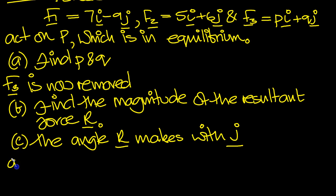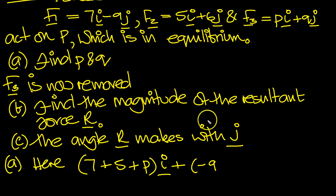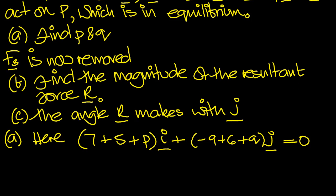So let's have a go at that then. So here, let's add up the i components, 7 plus 5 plus p, in the i direction is the resultant force in that direction, plus minus 9, plus 6, plus q, j, and that resultant force is 0 because it's in equilibrium.